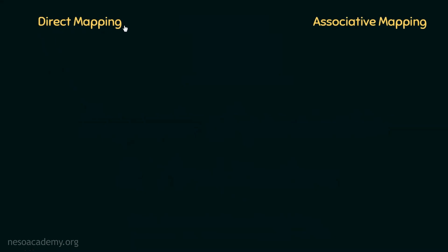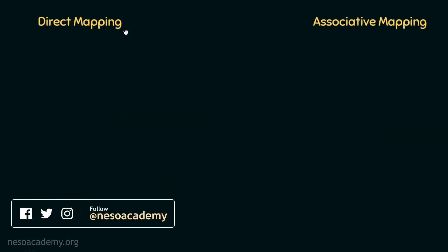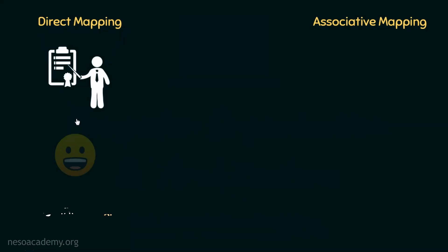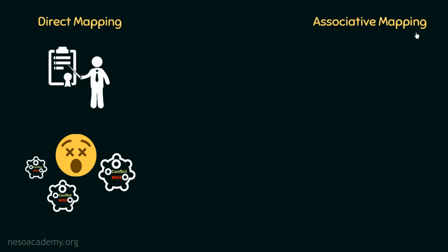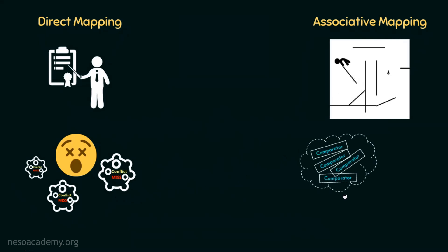During our discussion on direct mapping in session number 8, we came to know about its strict mapping policy — looking at the physical address bits using the line number bits portion, we could easily figure out to which cache line the main memory block is supposed to be mapped onto. However, in session number 13, we learned that it badly suffers from conflict misses. On the other hand, during session number 14, we witnessed that associative mapping was too flexible because we could map any main memory block to any cache line. This solved the conflict miss problem, but due to the need for comparators for every single cache line, the cost of implementation became too high.